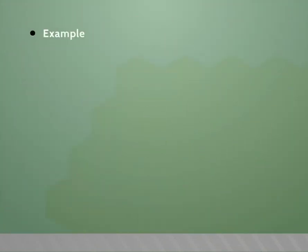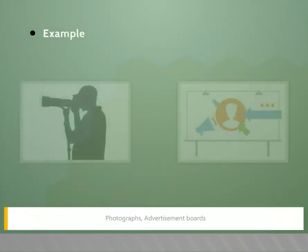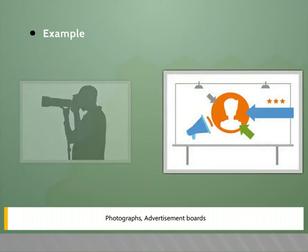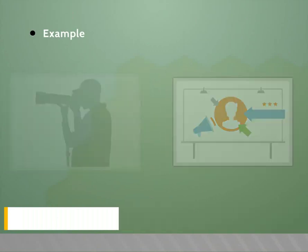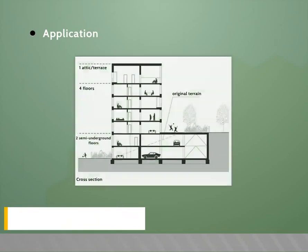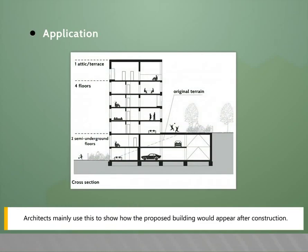Examples of perspective projection include photographs and advertisement boards. Its main application is in architecture: architects mainly use this to show how a proposed building would appear after construction.